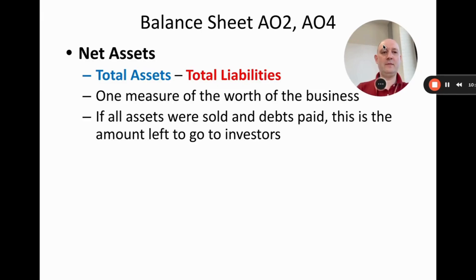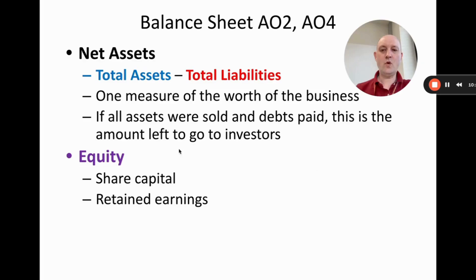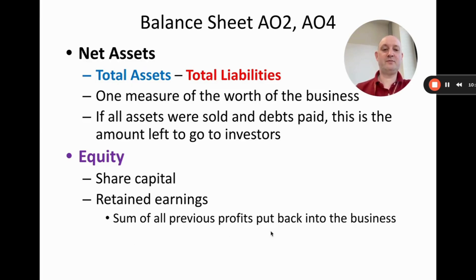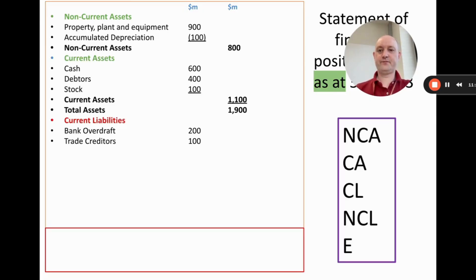Effectively, if we sold all the assets and paid off all the liabilities, this is how much money would be left — and that would go to investors. So we now need to add equity: the value of the business for shareholders or owners. Equity comes from share capital and retained earnings. Retained earnings are the sum of all previous profits put back into the business — from the profit and loss, profit could go to dividends or be retained. Equity equals net assets.